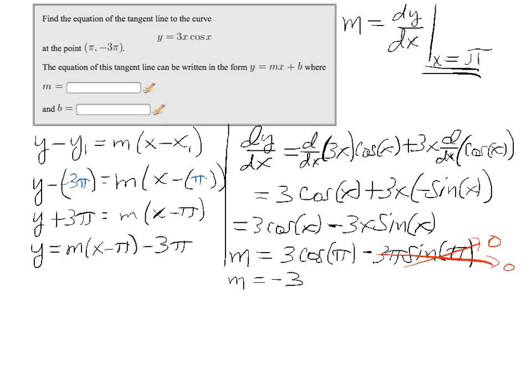So let's take this equation for the line here. And let's substitute the value for the slope that we just found, which is minus 3. And let's distribute and simplify. So minus 3x. And then minus 3 times minus π is plus 3π. Minus 3π.